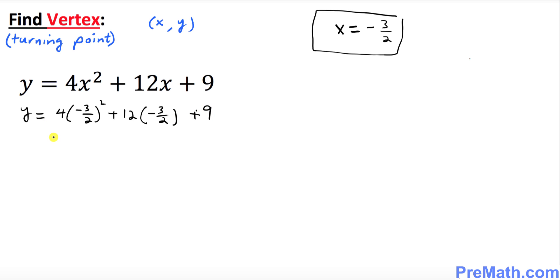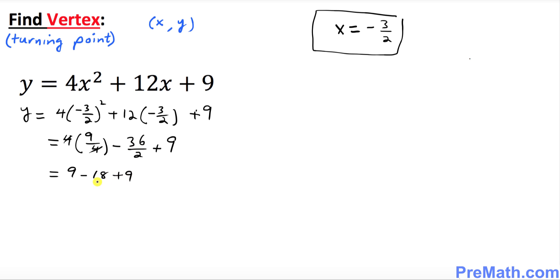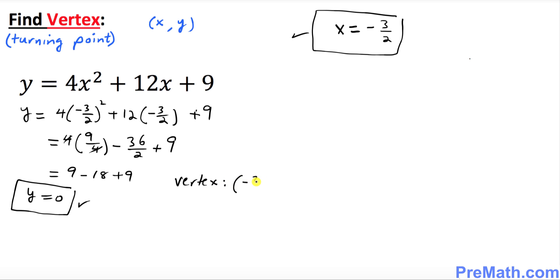Let's square that: 4 times 9 over 4, minus 36 over 2, plus 9. The 4s cancel, giving us 9 minus 18 plus 9, which means y turns out to be 0. So x equals negative 3 over 2 and y equals 0, meaning our vertex is simply (negative 3 over 2, 0).